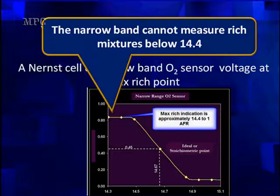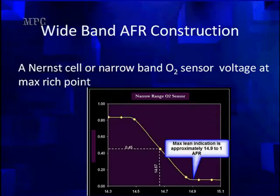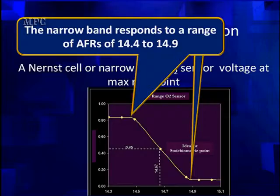It cannot measure anything beyond 14.4. The reason we bring this to your attention is for wide-open acceleration. Some people use this voltage to see if they're getting sufficient fuel flow. The ideal number for wide-open acceleration is 13.2 to 1 air-fuel ratio — there's no way for this sensor to measure that level. So don't use this for wide-open throttle saying you've got plenty of voltage. Max lean is about 14.9, and the PCM is going to take the vehicle down to see if it can get to maximum lean. The minimum level is 0.1 volt — if it doesn't get to 0.1 volt, it's not reading right. So we're looking at voltages between 14.4 to 14.9.